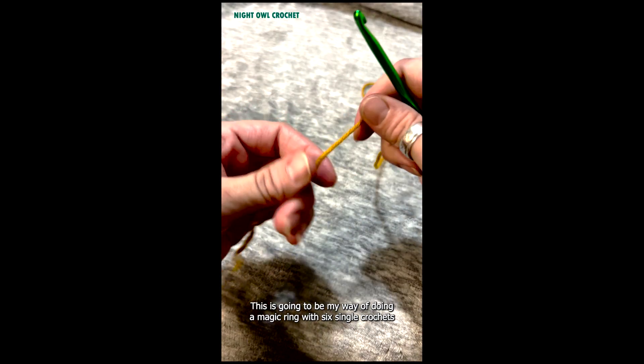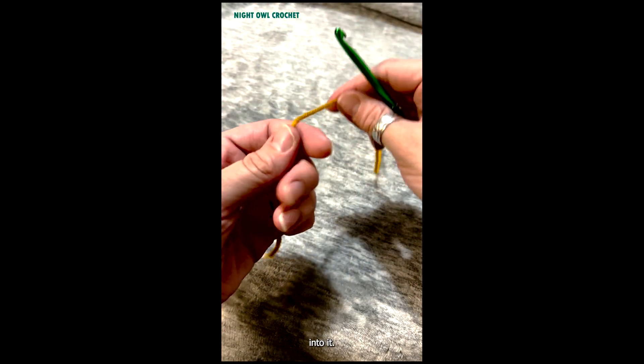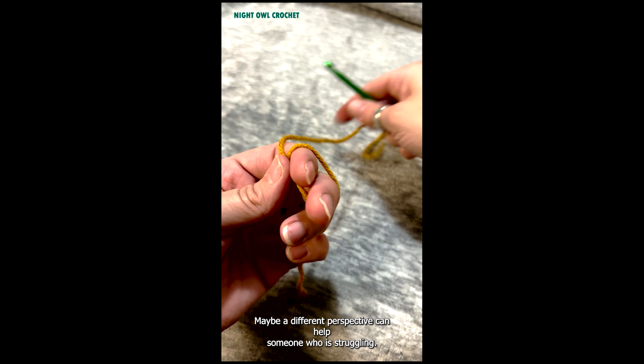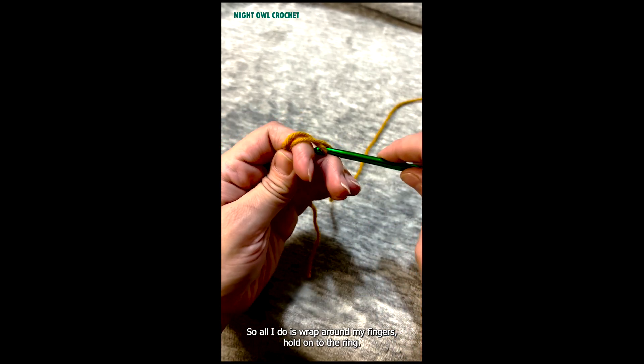Hello, this is going to be my way of doing a magic ring with six single crochets into it. Maybe a different perspective can help someone who is struggling. So all I do is wrap around my fingers, hold on to the ring.